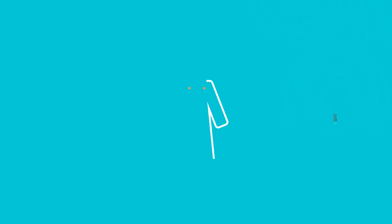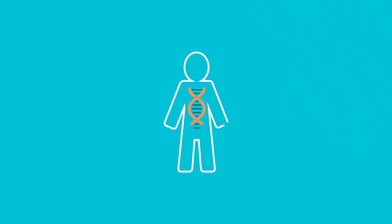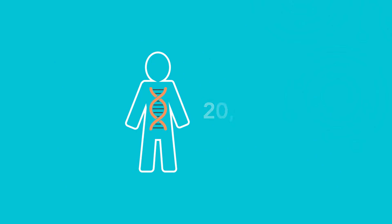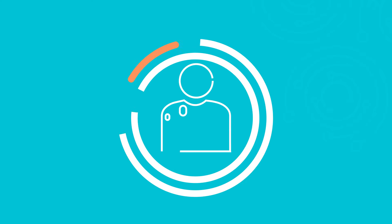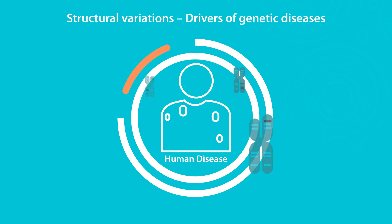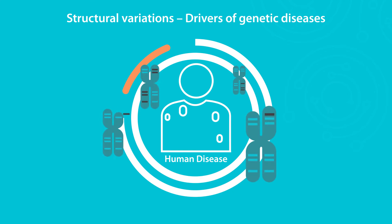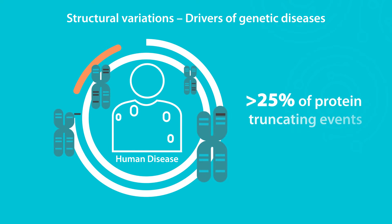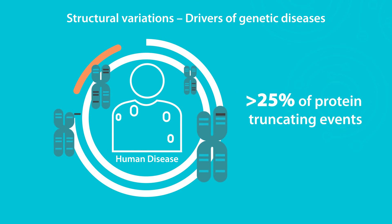It is thought that most individuals have at least 20,000 structural variants in their genome. Structural variants are widely recognized as drivers of constitutional disease and cancers and are responsible for more than 25 percent of protein truncating events that can cause disease.